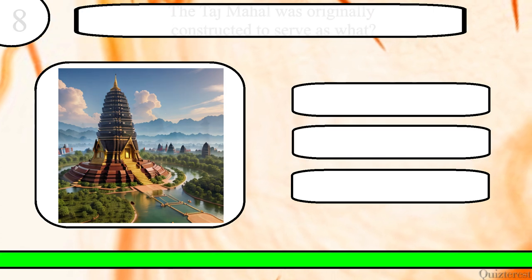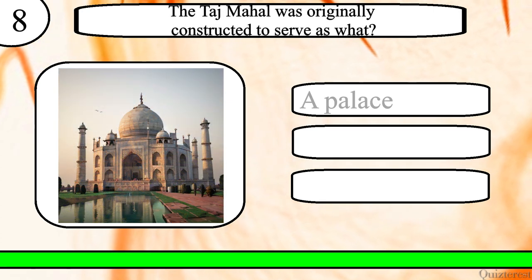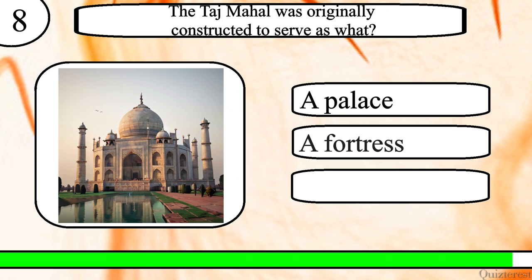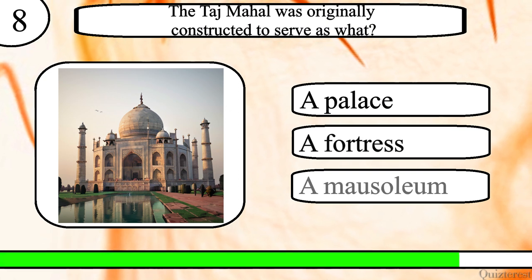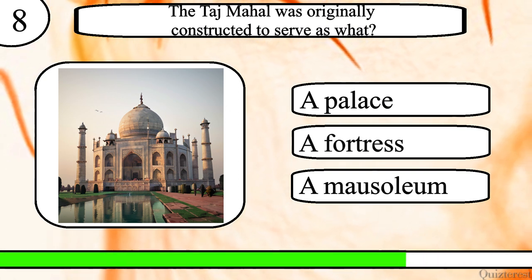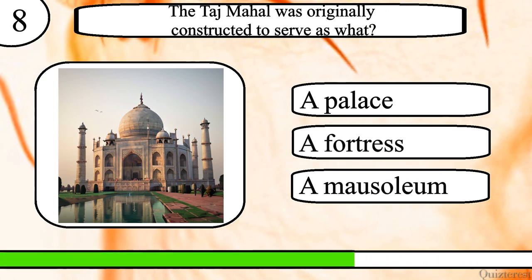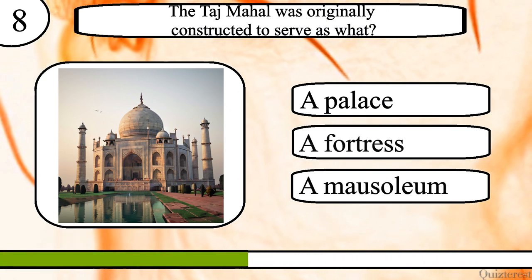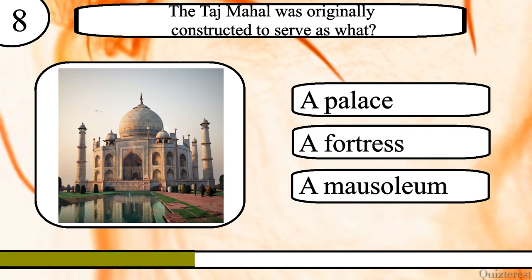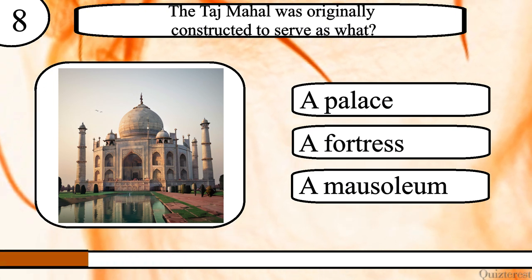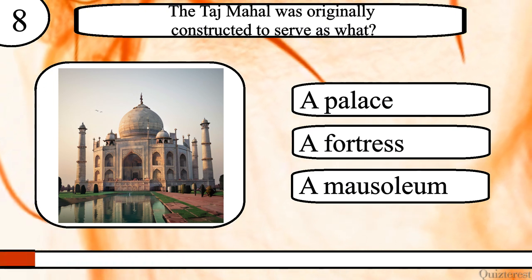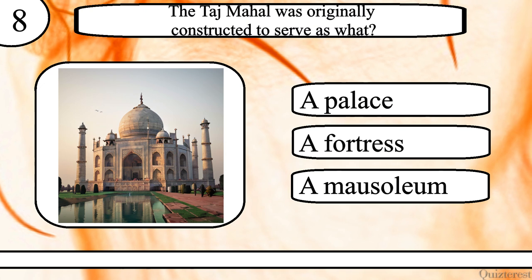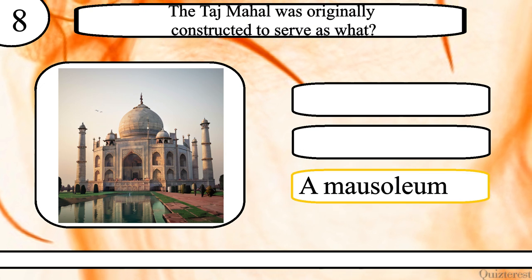Question 8. The Taj Mahal was originally constructed to serve as what? A palace, a fortress or a mausoleum? The correct answer is a mausoleum.